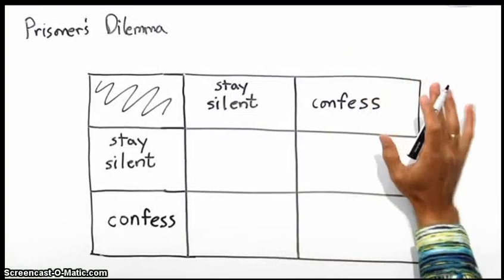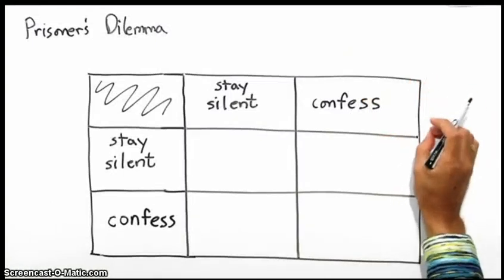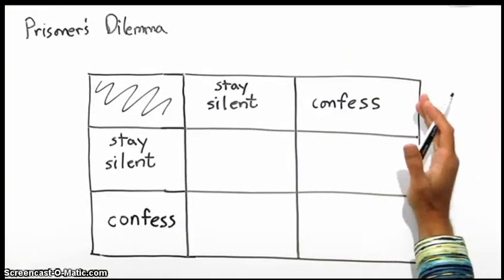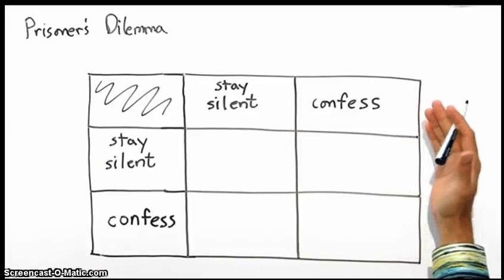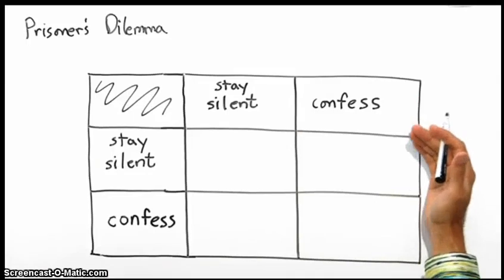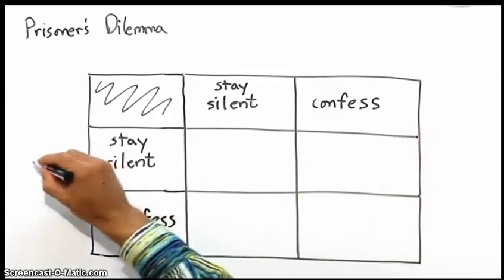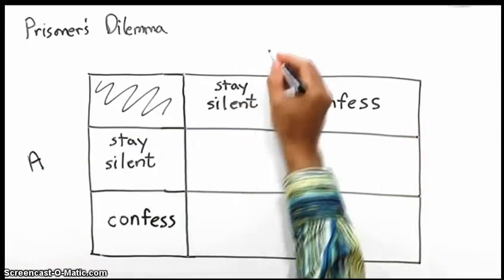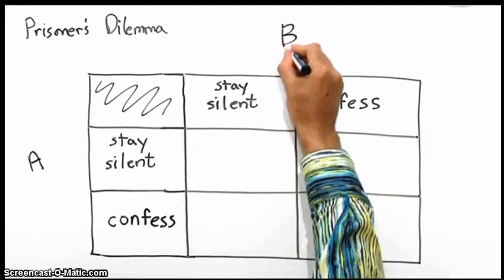Prisoner's Dilemma is a two-person game and it describes a situation facing two prisoners captured by the police: Prisoner A and Prisoner B.